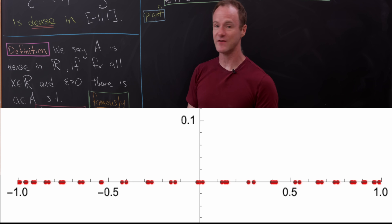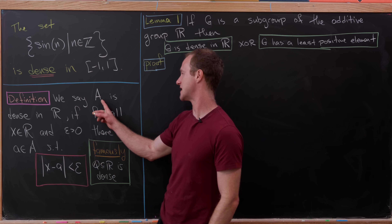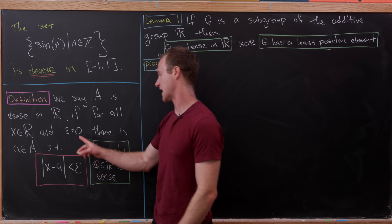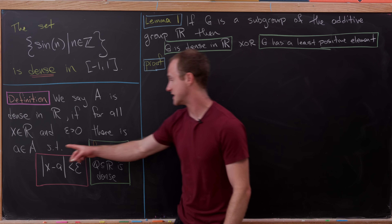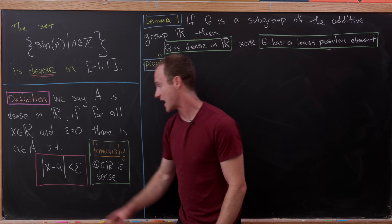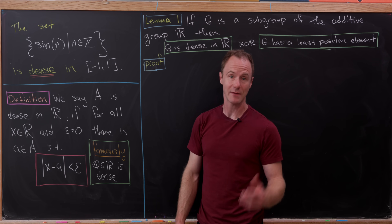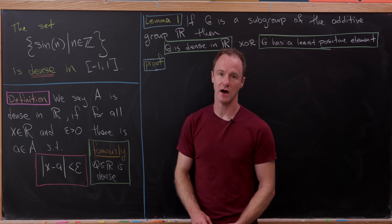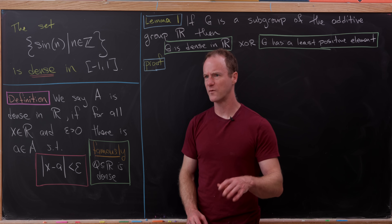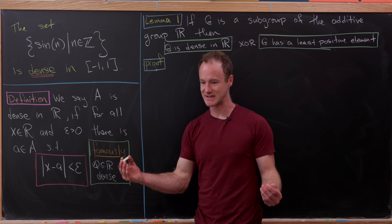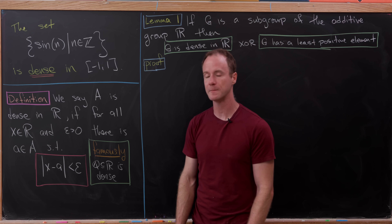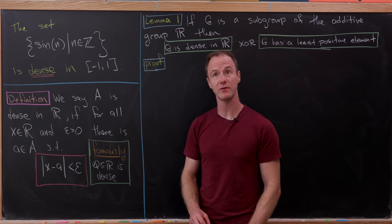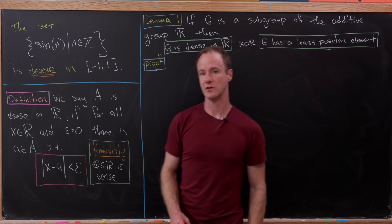Let's look at the definition of density of a set. We say a set A is dense in the real numbers if for all real numbers x and epsilon bigger than zero, there is an a in A such that the absolute value of x minus a is less than epsilon — in other words, a is within epsilon of x. So for any real number we should be able to find an element of that set super close to it. Famously, the rationals are dense in the reals.